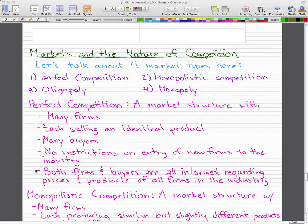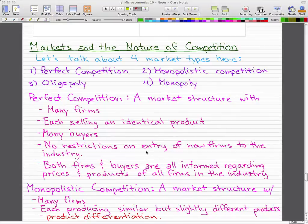Let's start talking about the four market types here and go through perfect competition first. Perfect competition is a market structure with many firms, each selling the same identical product and many buyers, and there is no restriction on entry of new firms to the industry.